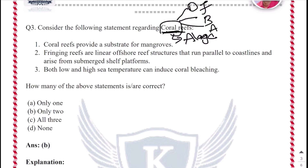Fringing reefs are present lying shoreward of offshore reef structures and are mainly seen in the Gulf of Mannar and Gulf of Kutch. Barrier reefs are linear offshore reef structures that run parallel to the coastline and arise from submerged shelf platforms. These are seen in the Nicobar and Lakshadweep islands.